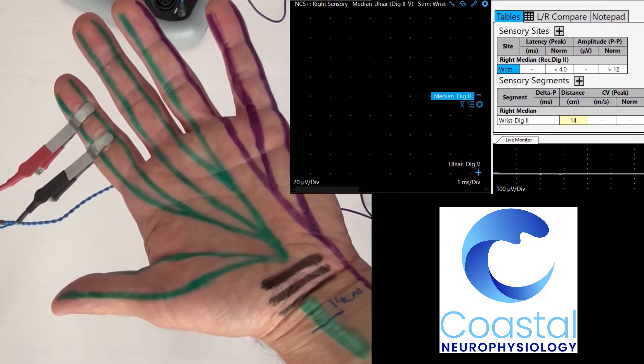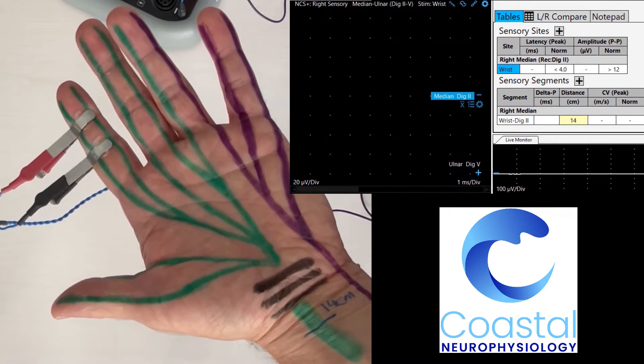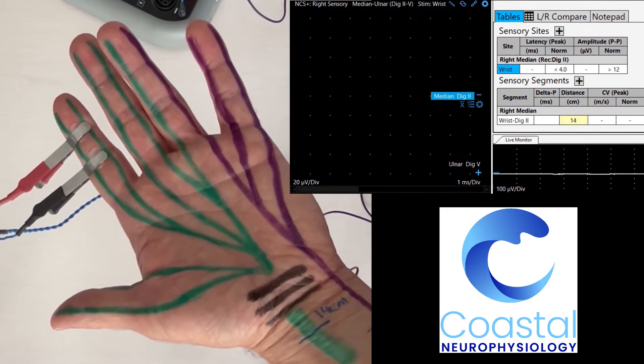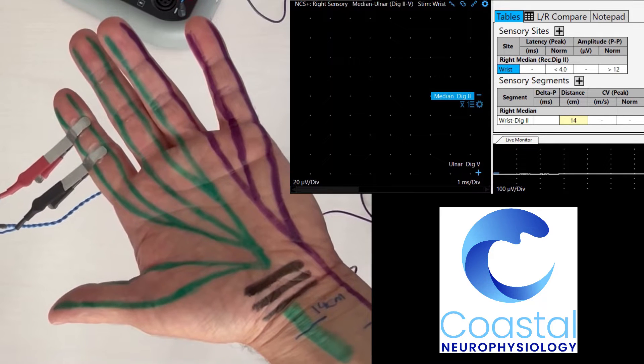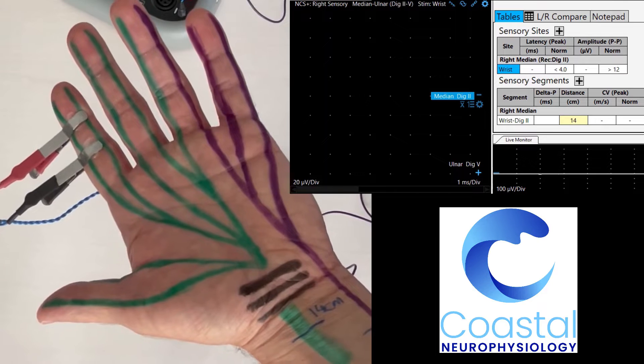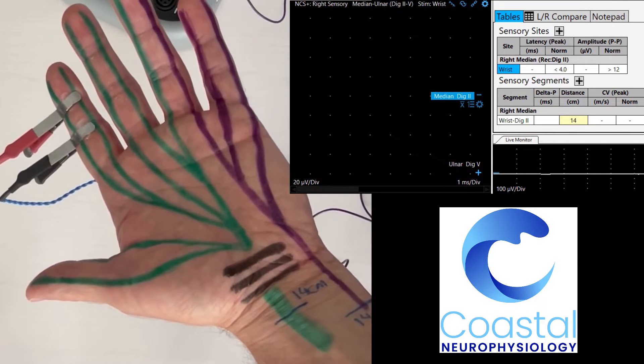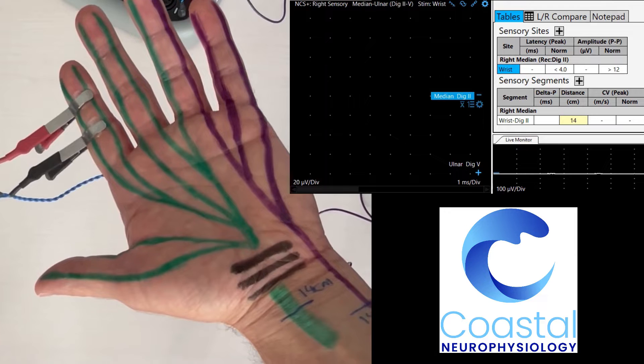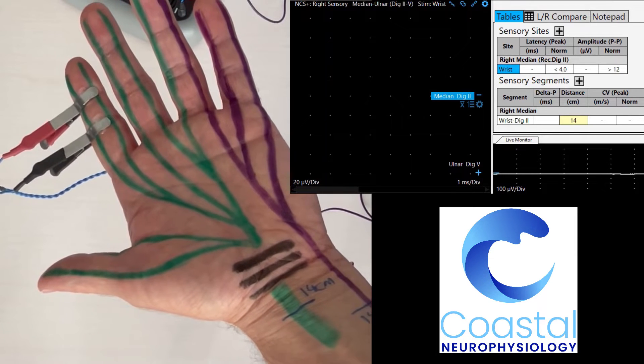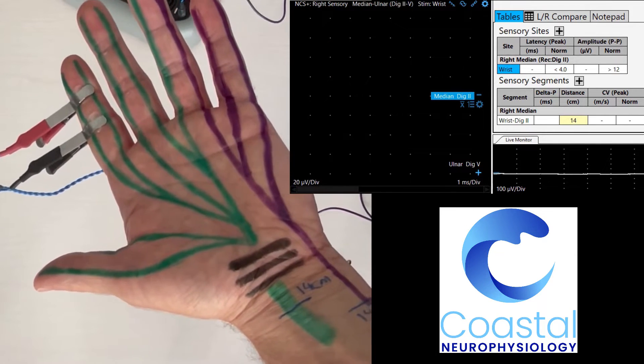When we send this signal through the nerve, we can then measure the sensory signal as it arrives at its destination, both in terms of its size and also in terms of how long it took to get the signal there. With nerves, the two most important things are the size of the signal and the speed at which it travels. So the amplitude of the signal and the latency of the signal, as in how long it took, are the most important things.